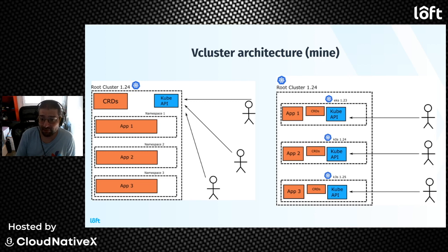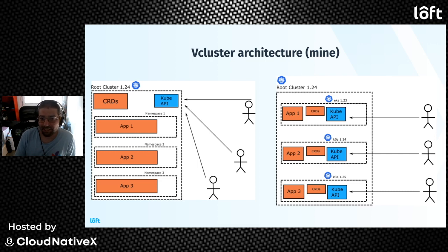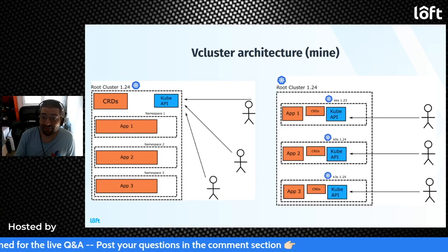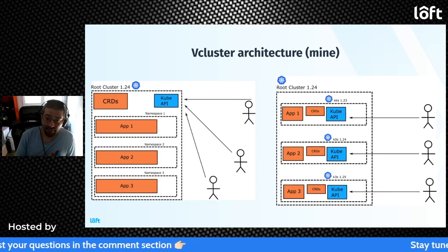One immediate advantage is with custom resources. In a single cluster, CRDs are global and shared between everyone — you install them once, and conflicts arise if someone wants a newer or older version. With virtual clusters, CRDs are installed per cluster, giving you greater capability to run different software. Virtual clusters also allow you to run a different Kubernetes version — potentially different from the parent cluster, or even a different distribution. It doesn't have to match the parent.